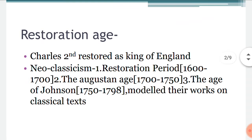The Restoration period is also called Neoclassicism because their works were based on the classical texts. Neoclassicism has three stages: first, the Restoration period starting from 1660 to 1700, then the Augustan Age, and then the Age of Johnson.